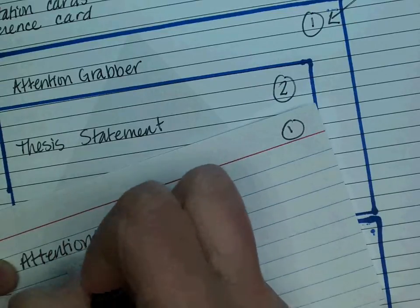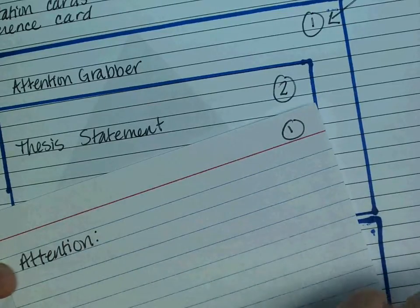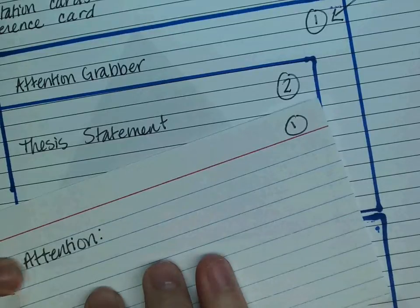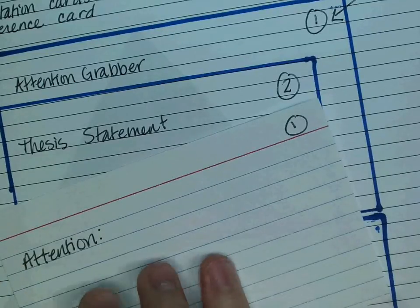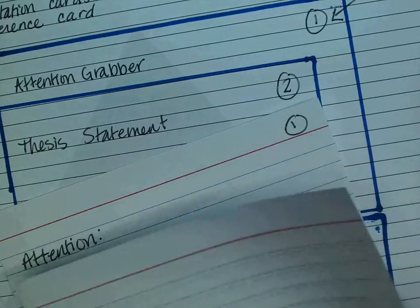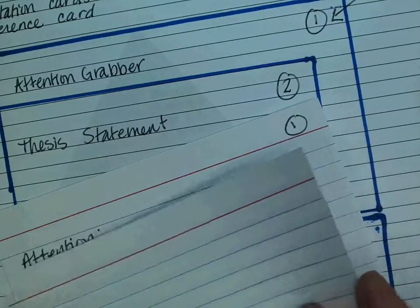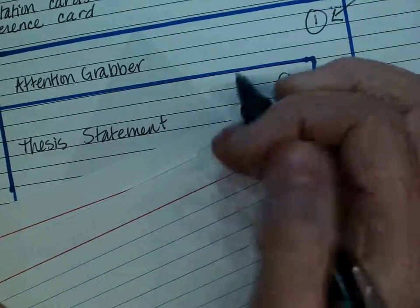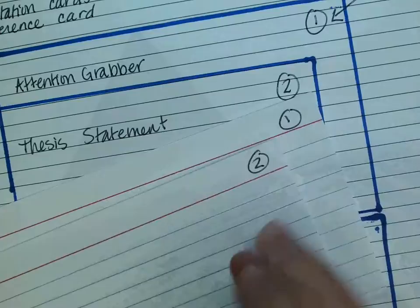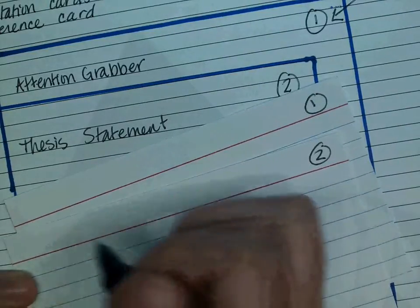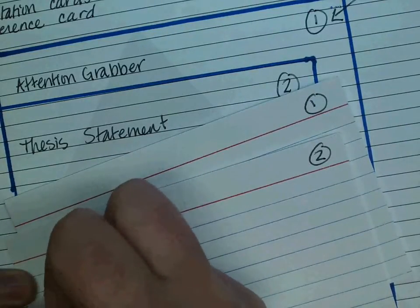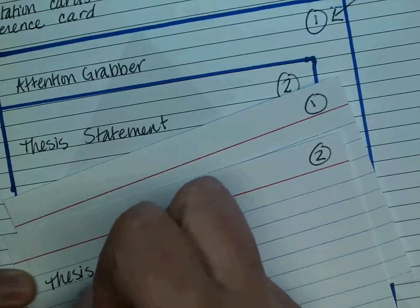You will eventually learn that there are four parts to a functional introduction. Right now, we're just working on attention grabbers and thesis statements. On your second card, we're going to label that number two so that if they get out of order, you can get the ordering more quickly. We're going to label that thesis statement.